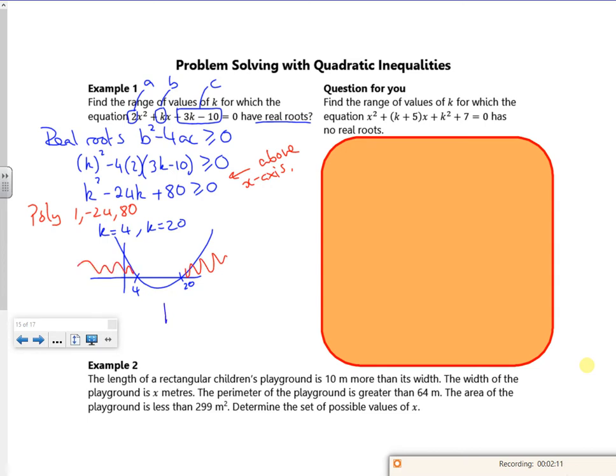So I've got k is less than or equal to 4, or k is greater than or equal to 20. I just need to add that k belongs to the real numbers such that. There's some wonky brackets there. Perfect, that's what we want.